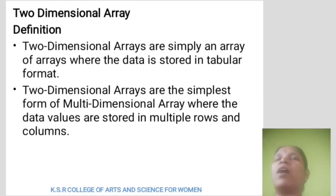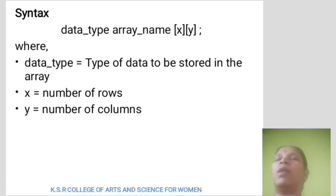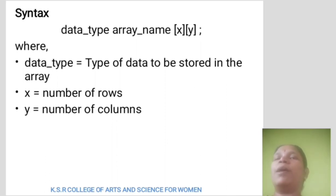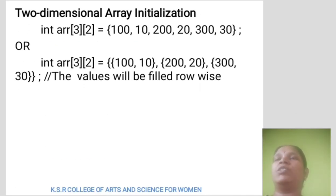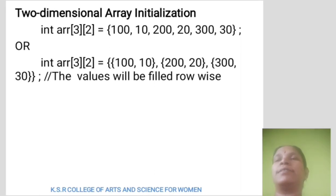Two-dimensional array. Two-dimensional arrays are simply an array of arrays where the data is stored in tabular format. Two-dimensional arrays are the simplest form of multi-dimensional arrays where data values are stored in multiple rows and columns. Syntax: data_type array_name[X][Y], where data type is the type of data to be stored — for example, integer, character, etc. X is equal to number of rows, Y is equal to number of columns. Two-dimensional array initialization example: int arr[3][2] = {100, 10, 200, 20, 330}.